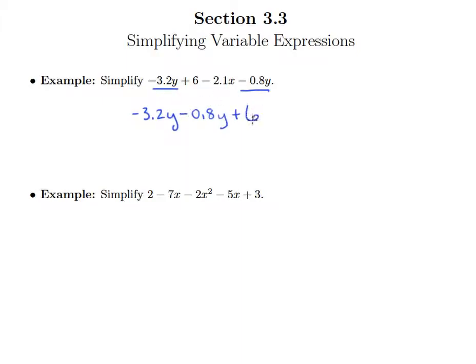So if this is a plus out here you'd have a plus here, but since it's a minus we have a minus right there. And then the plus 6 doesn't move, the minus 2.1x doesn't move. Then we need to combine these. So that really amounts to just figuring out what negative 3.2 minus 0.8 is. But that's just plus negative 0.8, which is negative 4. So we end up with negative 4y plus 6 minus 2.1x.